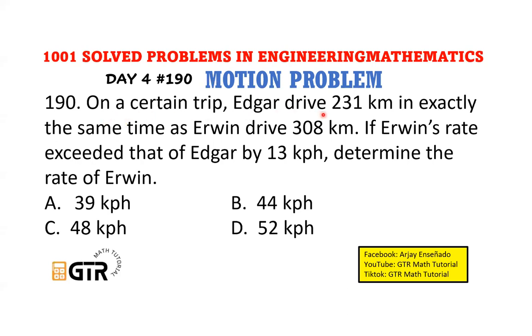On a certain trip, Edgar drove 231 kilometers in exactly the same time as Erwin drove 308 kilometers. If Erwin's rate exceeded that of Edgar by 13 kilometers per hour, determine the rate of Erwin. So mga choices, 39, 44, 48, and 52 kph.